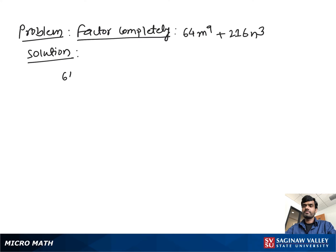Factor completely 64m^9 + 216n^3. First we find the common factor from both sides, which is 8. If we divide 64 by 8, we get 8. Then we divide 216 by 8, which is 27. So you can write 8 times (8m^9 + 27n^3).